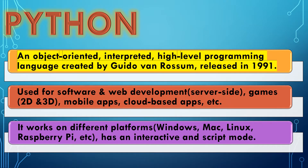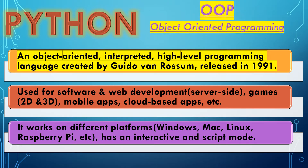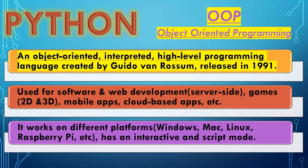Python is a multi-paradigm programming language, meaning it supports different programming approaches. One of the popular approaches to solve a programming problem is by creating objects. This is known as object-oriented programming, or OOP. An object-oriented program is a collection of interacting objects, and each object is capable of sending and receiving messages and processing data.